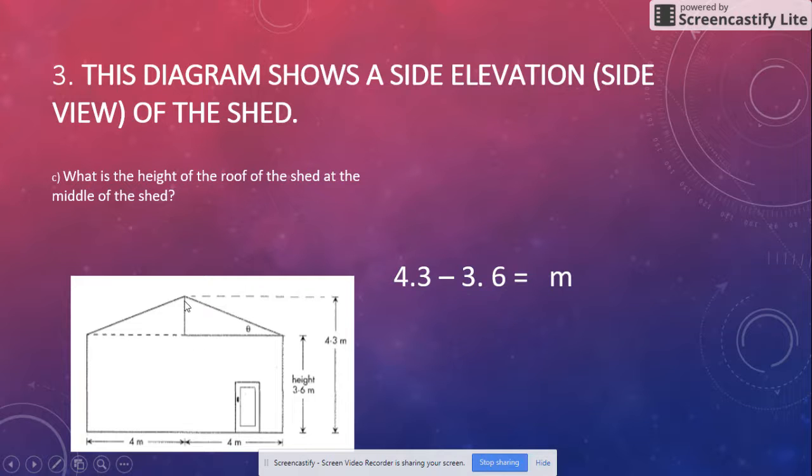We know what this is there because we've got 4 meters over here. Can you see there's 4 meters? They want to know what the height of the roof is. We've got 4.3 all the way up to there and we've got 3.6 all the way there. So we can say 4.3 minus 3.6, and that'll give us how many meters it is.